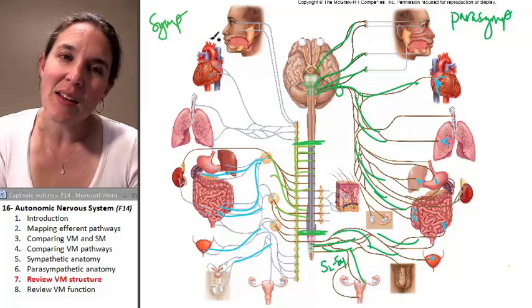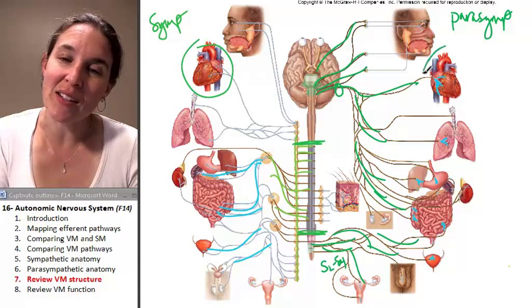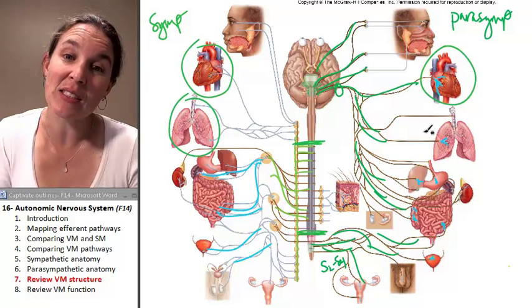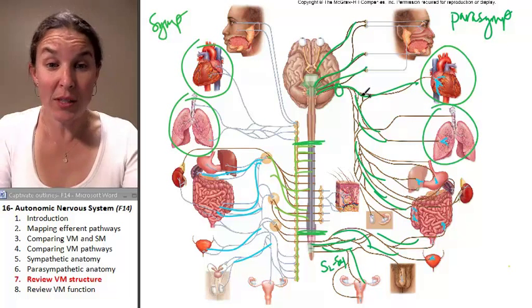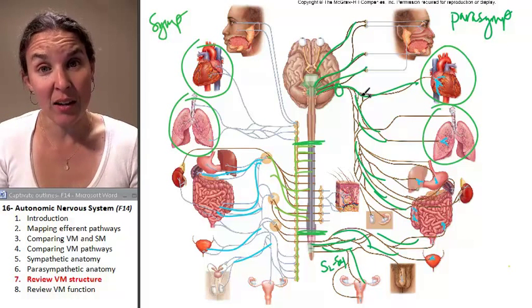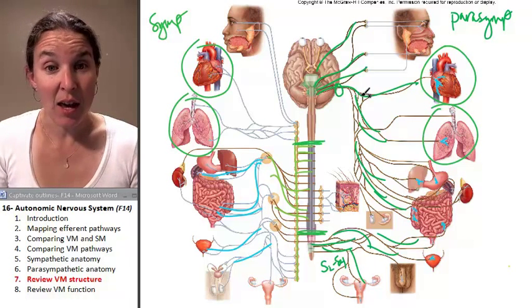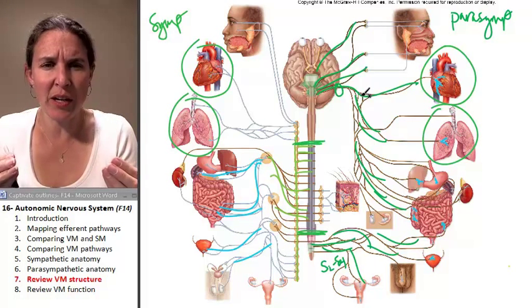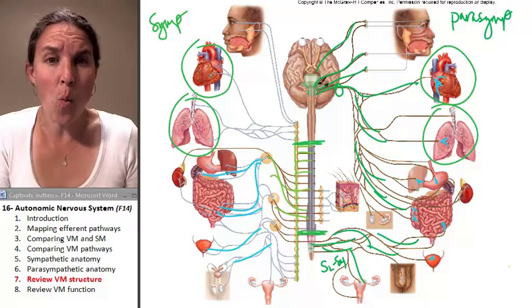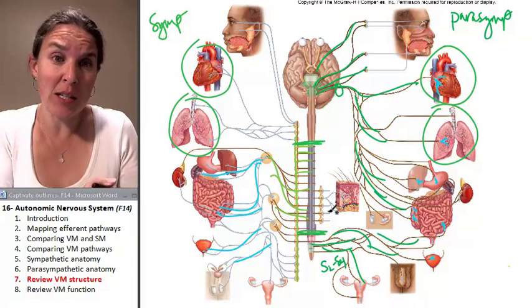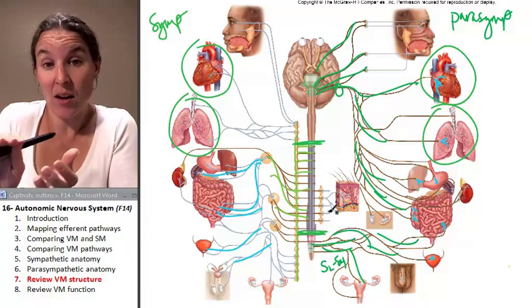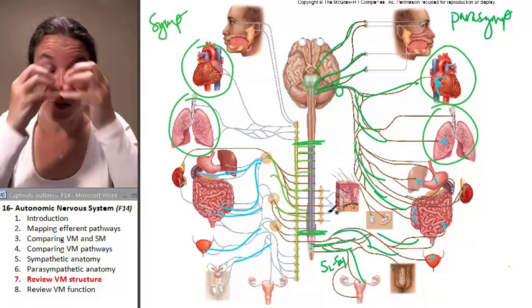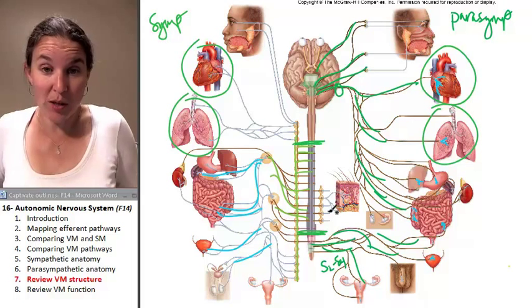Notice that both sides innervate the heart. Both sides innervate the lungs. Both sides innervate everything. That's good. And both sides are going to, just in case you were wondering, it's not like one side of your body feeds sympathetic and the other side of your system feeds parasympathetic.